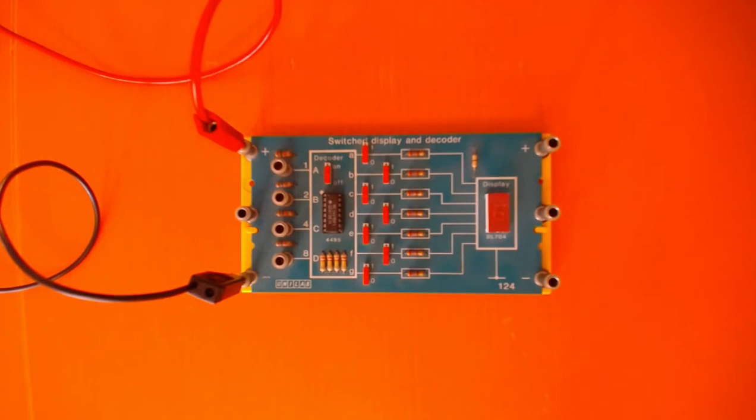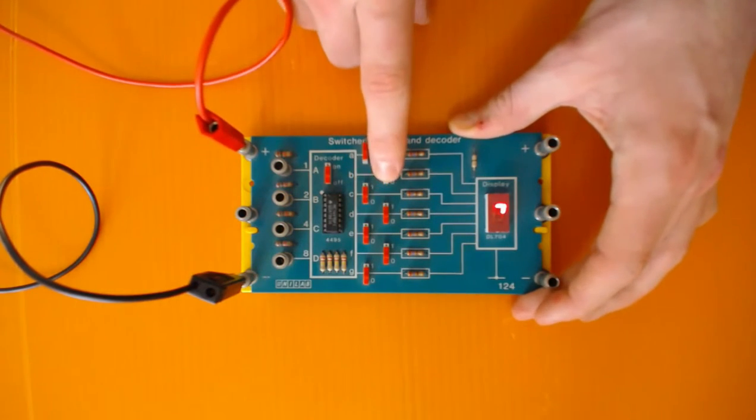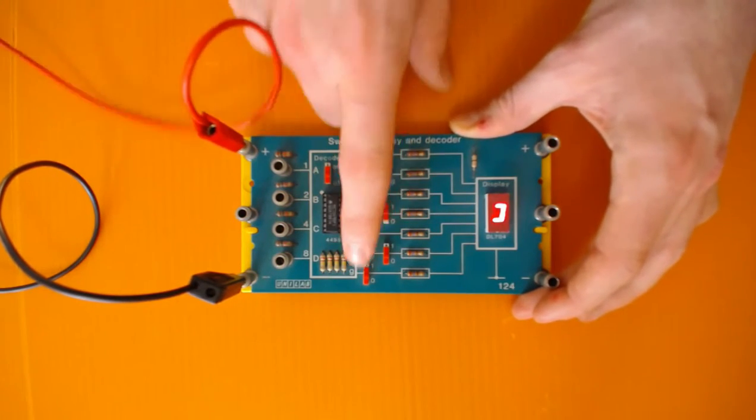For number 3 we turn on A, B, C, D and G.